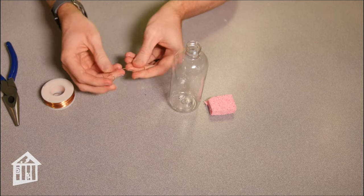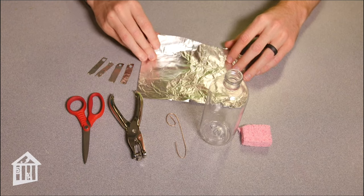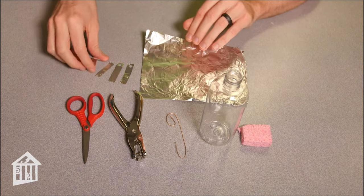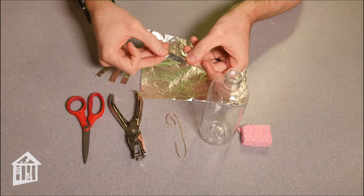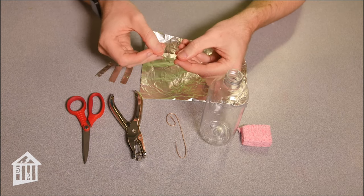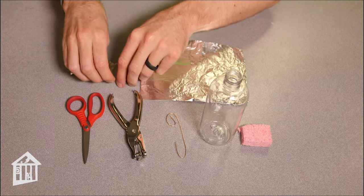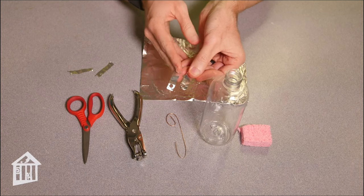The third step is to cut our aluminum foil into thin strips like this. Once you have your thin strips, you need two of them, and you're going to put a hole punch at the end.